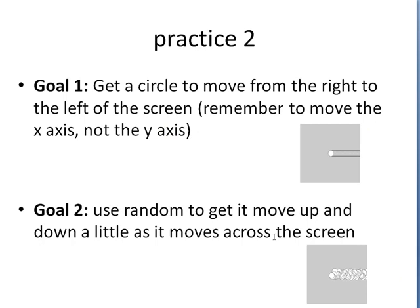Once you have that one, move on to practice 2. Plot a circle out on the right-hand side of the screen and have it move from the right to the left. Then, add the random. Again, this has nothing to do with variables, this is just review so that when it moves from the right to the left it wiggles a little bit up and down.